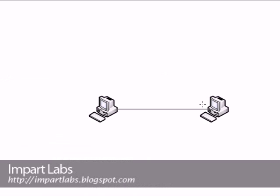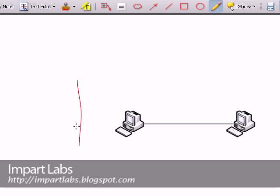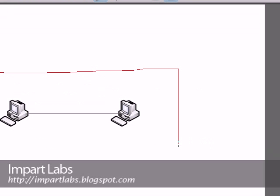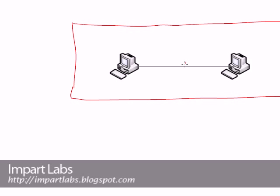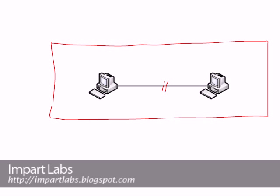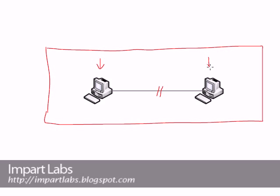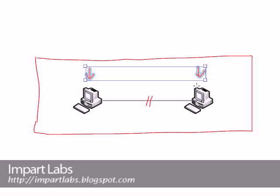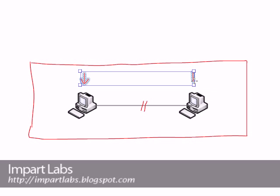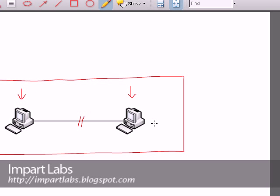The simplest network you could create is between two computers, and it is the only topology where you would use a crossover cable. One end of the crossover cable is connected to one computer and the other end is connected to the network card on the other computer. You configure IP addresses on both computers and they are simply connected to each other so you can send data back and forth.